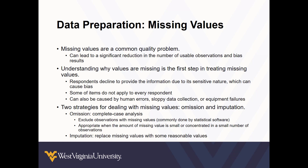We have two primary strategies for dealing with missing values: omission and imputation. With omission, we exclude observations with missing values, and this is commonly done automatically by statistical software, including R. This is appropriate when the amount of missing values is small or concentrated in a small number of observations. But before simply accepting omission as an appropriate approach, it's important to know why the data are missing. If the pattern of missing data tends to be fairly random, you're probably okay.